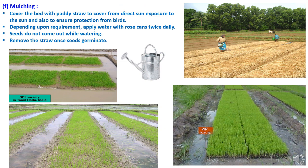The sixth step is mulching. Cover the beds with paddy straw to protect from direct exposure to the sun and from birds. Depending upon requirement, apply water with rose cans twice daily, taking care that the seeds do not come out while watering. Remove the straw cover once seeds germinate.